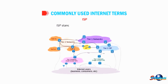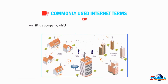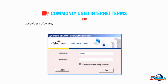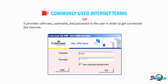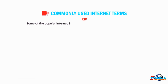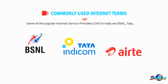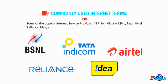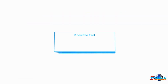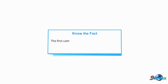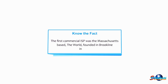ISP stands for Internet Service Provider. An ISP is a company which offers you the use of the internet in exchange for a fee. It provides software, username, and password to a user in order to get connected to the internet. Some popular internet service providers in India are BSNL, Airtel, Reliance, and Idea. The first commercial ISP was the Massachusetts-based company 'The World,' founded in 1989.